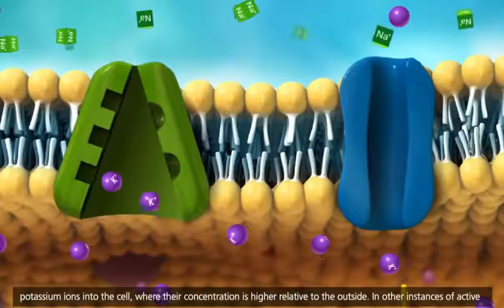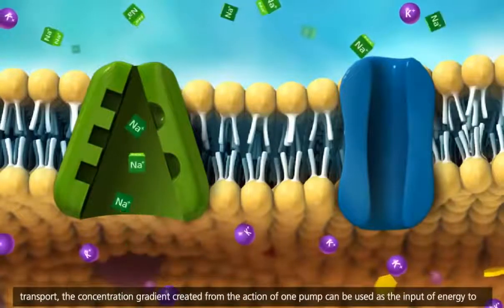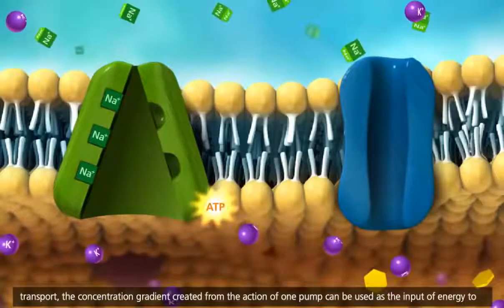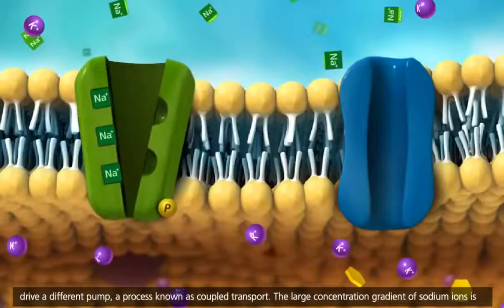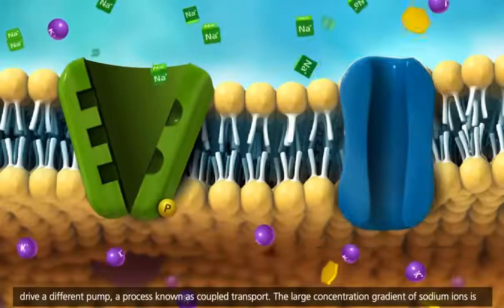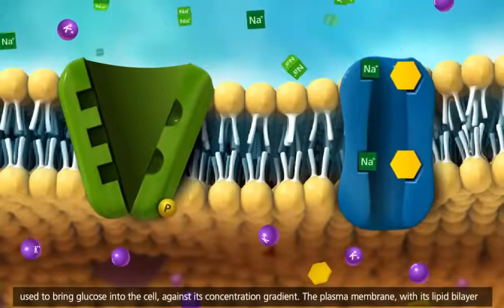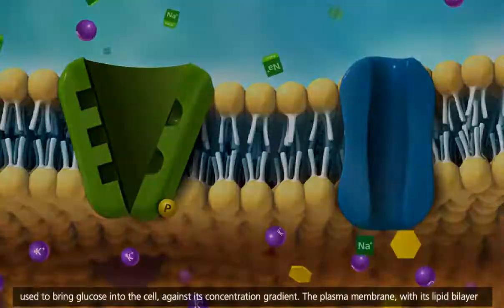In other instances of active transport, the concentration gradient created from the action of one pump can be used as the input of energy to drive a different pump, a process known as coupled transport. The large concentration gradient of sodium ions is used to bring glucose into the cell against its concentration gradient.